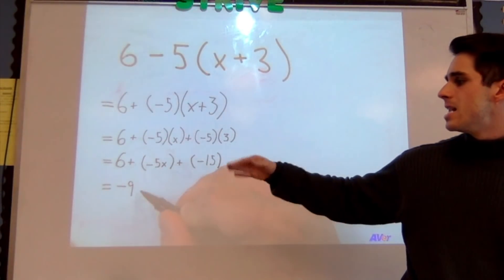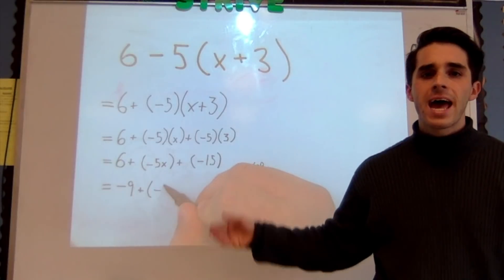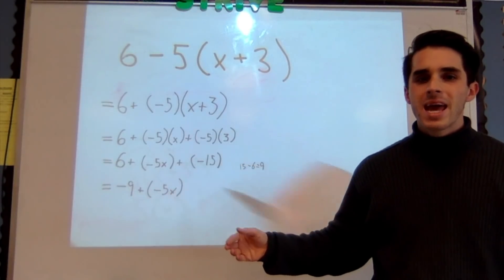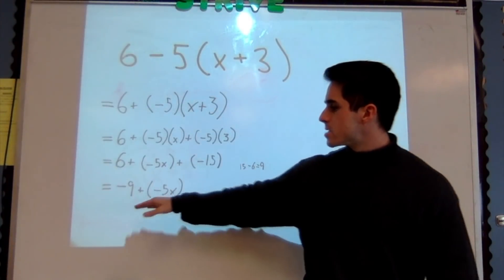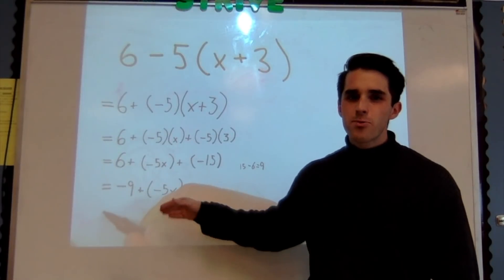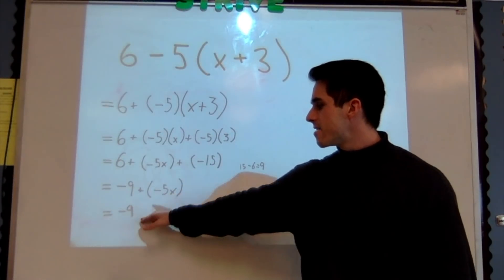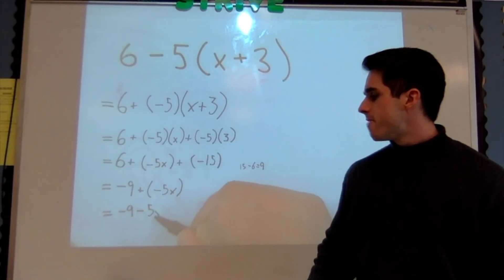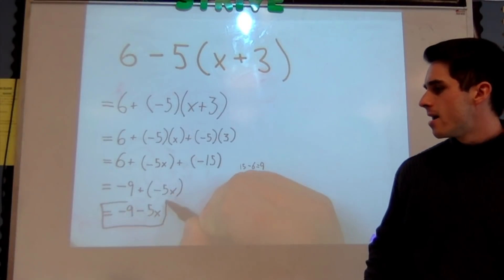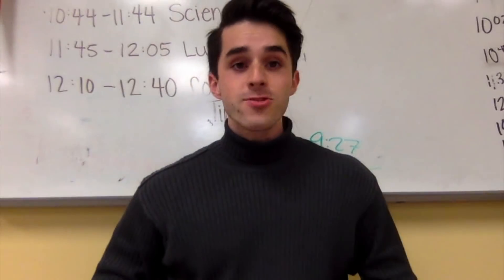-9 + (-5x). And again, we don't really need this + (-5x), we can write this as just -9 - 5x, and we're going to box that as our final answer.